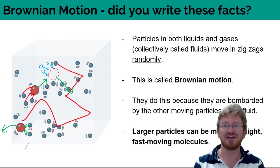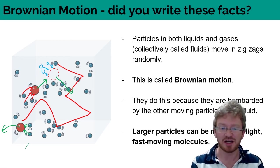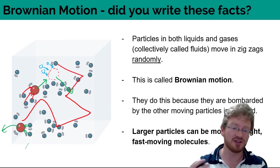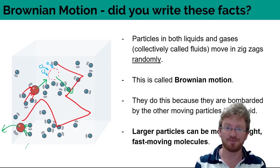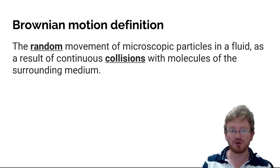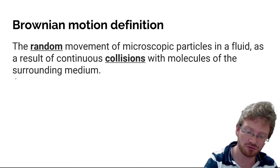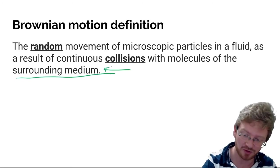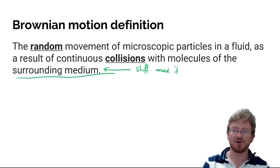The direction that the particles are traveling in is random, which means that sometimes you'll get more collisions on one side than the other. And that means sometimes there'll be a net force one way, sometimes the other way. And overall, it makes things just jiggle around. You can't predict where they're going to go because it's random. Now at IGCSE, that randomness is about as much as you need to know. So CIE love a key definition. Here's one for you: Brownian motion is the random movement of microscopic particles in a fluid as a result of continuous collisions with molecules of the surrounding medium.